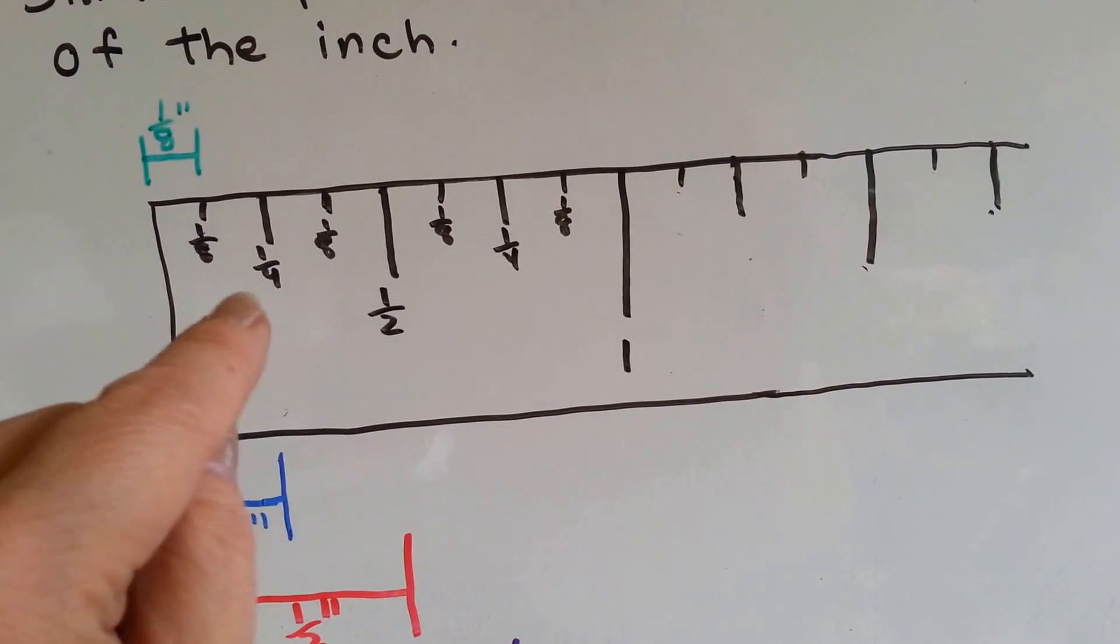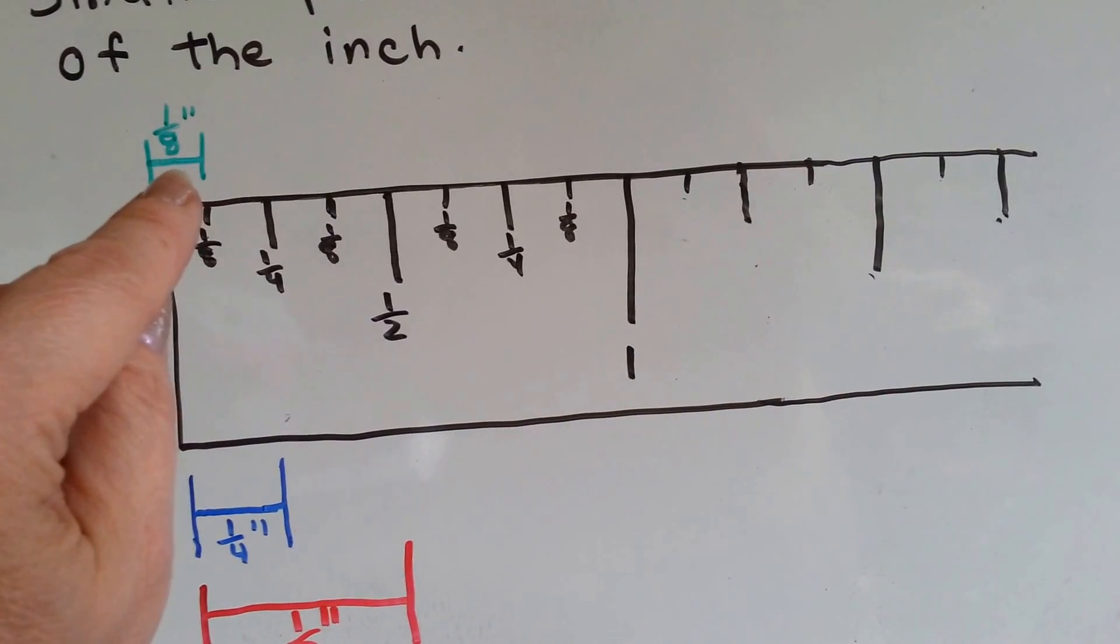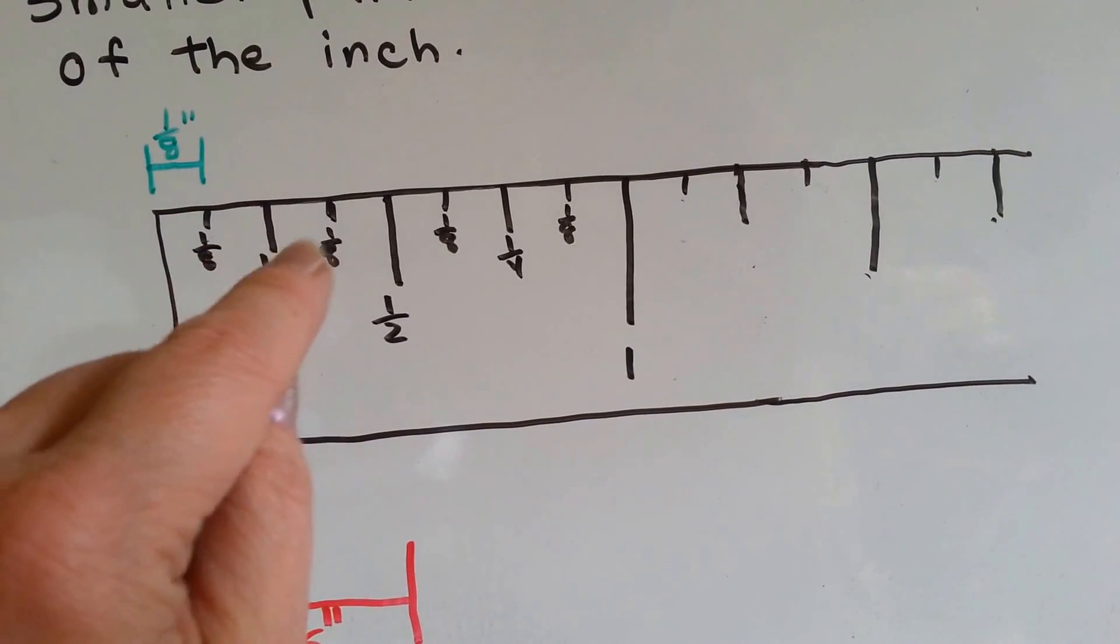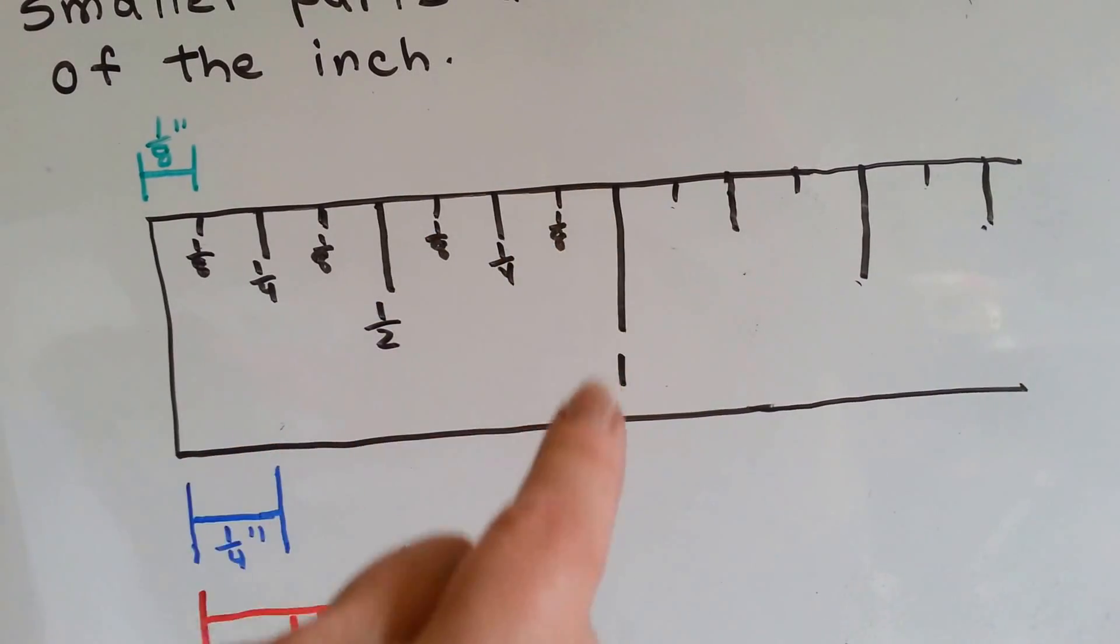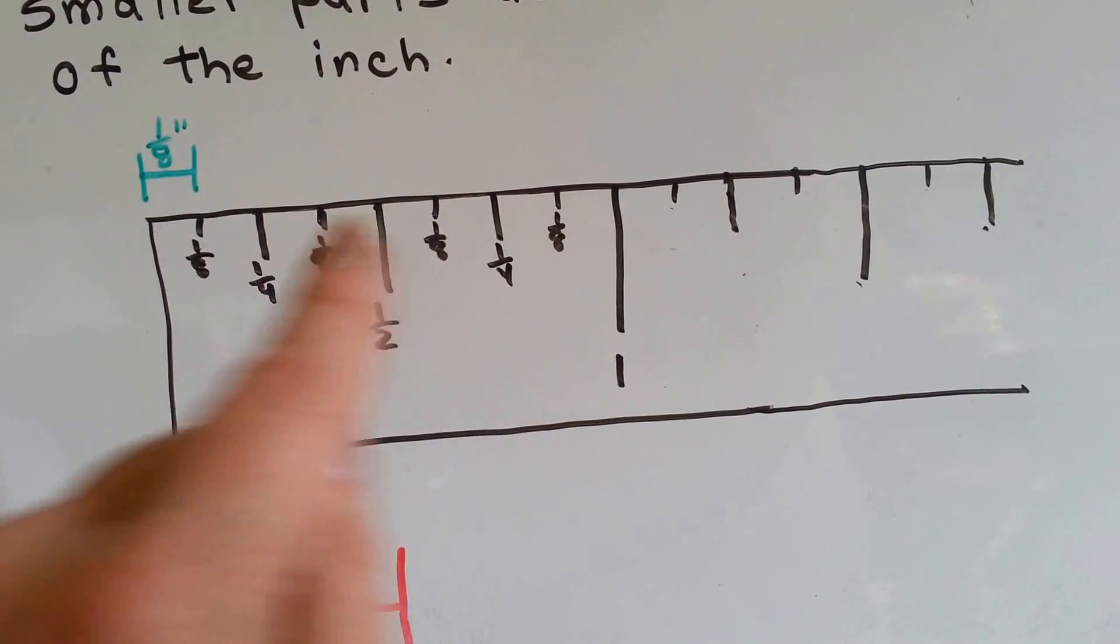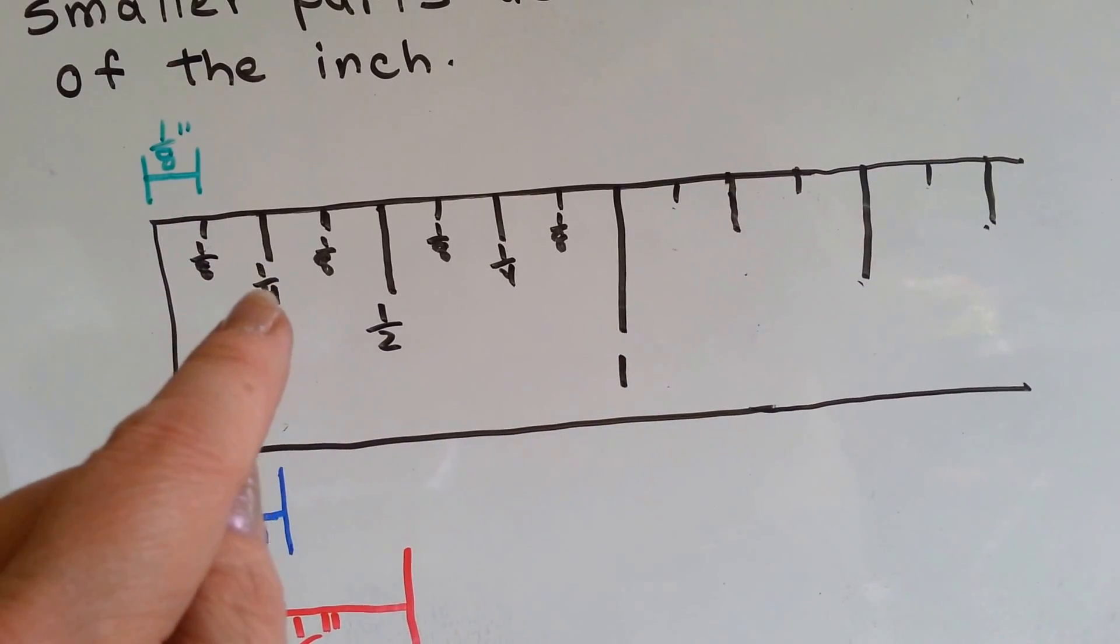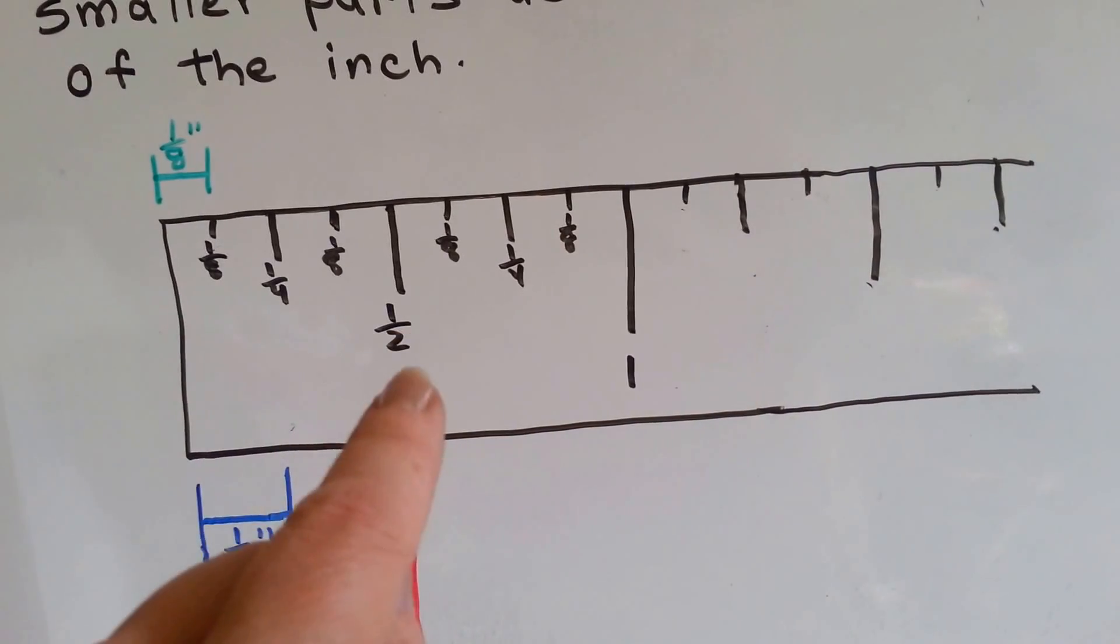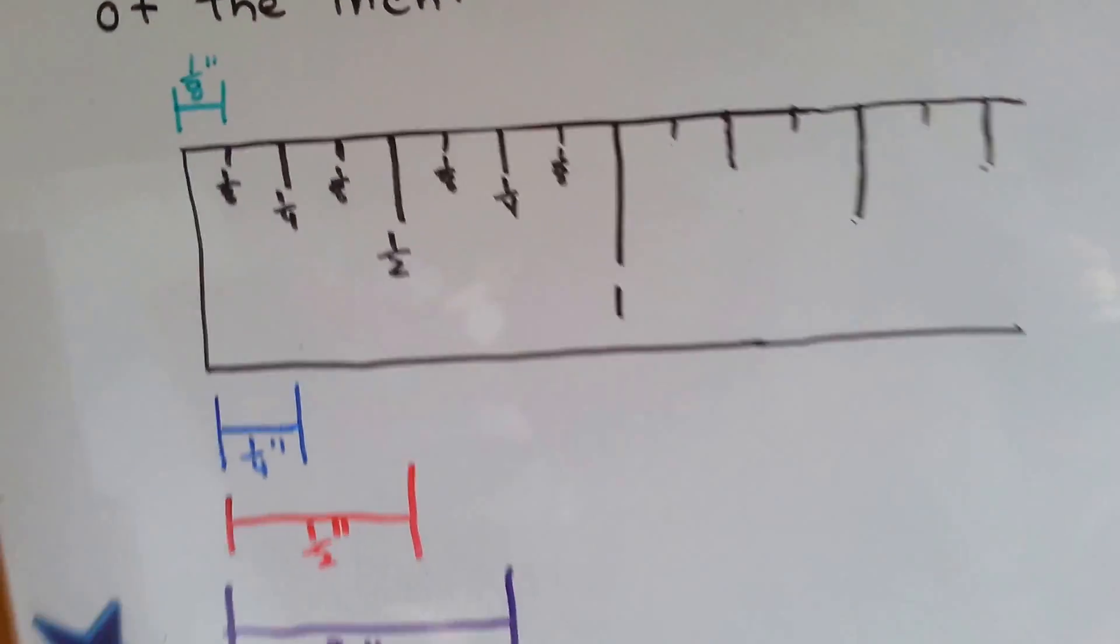In between the quarter inches is eighth inches. And look, there's one, two, three, four, five, six, seven, eight. That's why it's called eighths because there's eight of them in an inch. The fourth inch is called that because there's four of them in an inch. And the half inch has the two for the denominator because there's two in an inch.